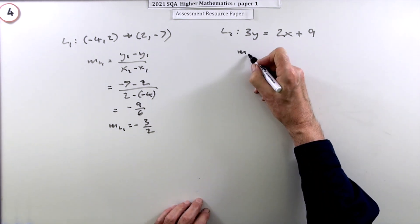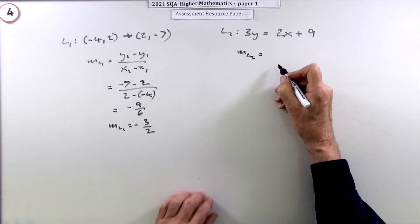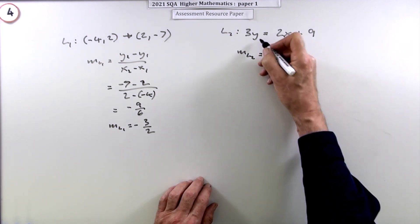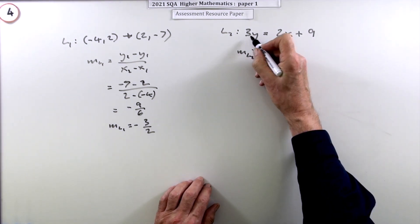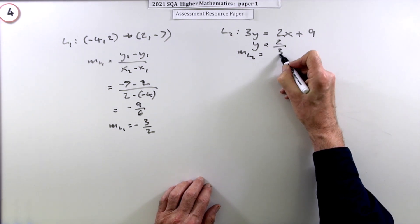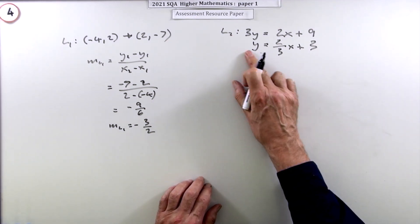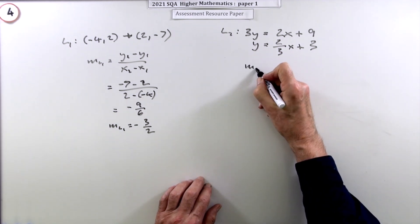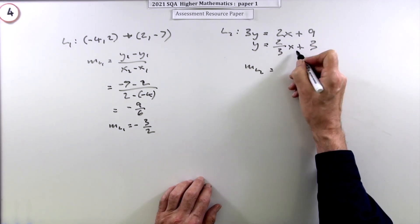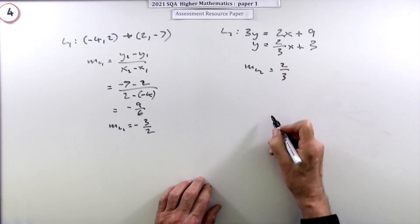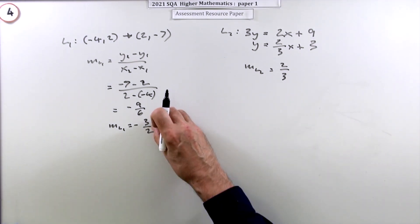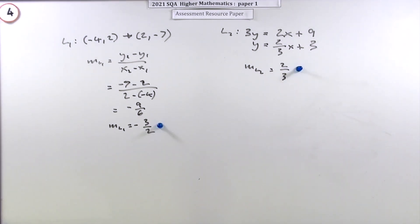Fairly quickly you've got the gradient of line 2. Once you've rearranged that, take that 3 across and divide, and you've got 2 thirds of x plus 3. So its gradient will be the coefficient of x, 2 thirds. That's a mark each, that's a mark and that's a mark.